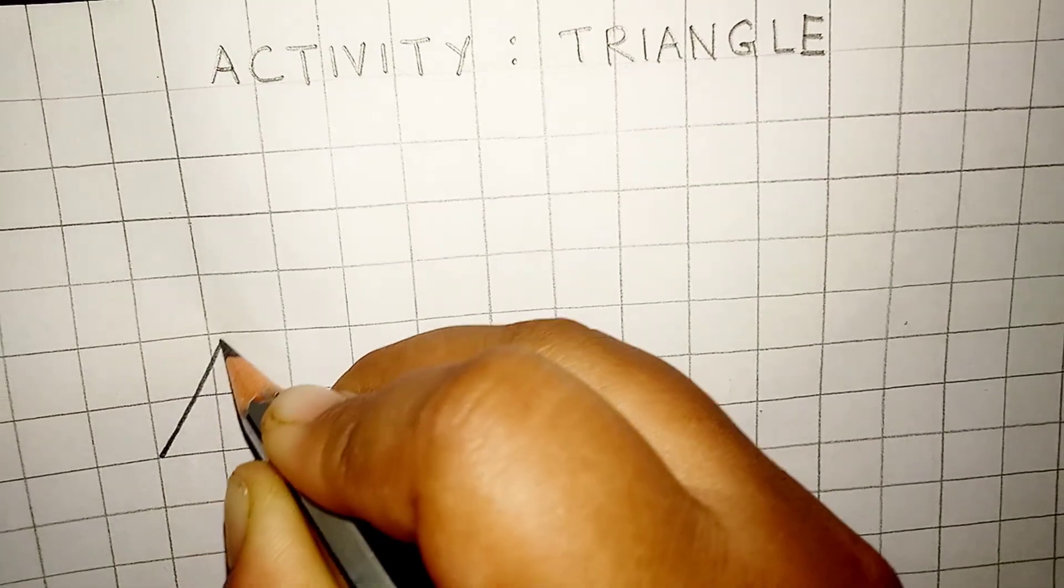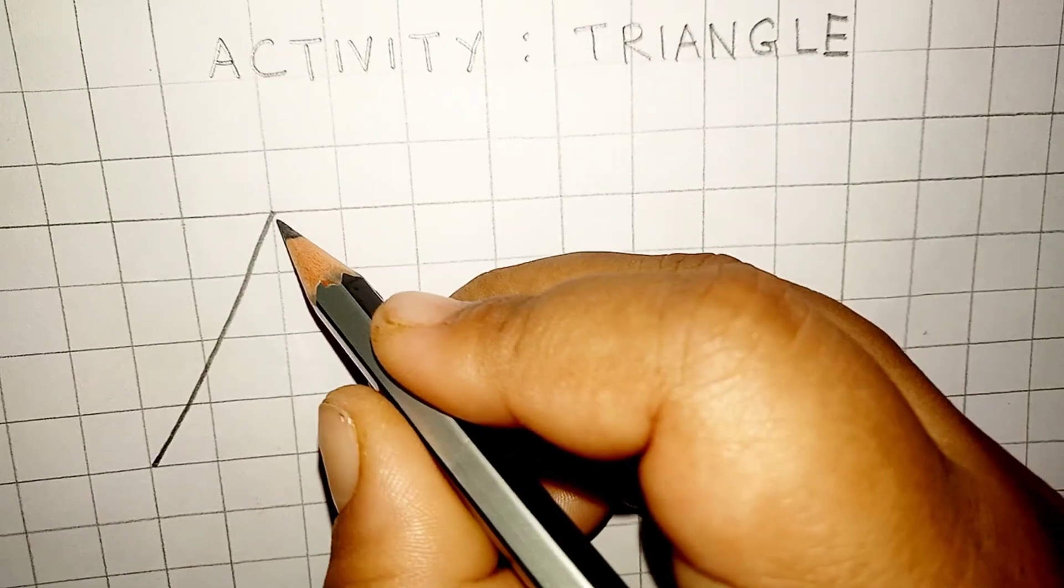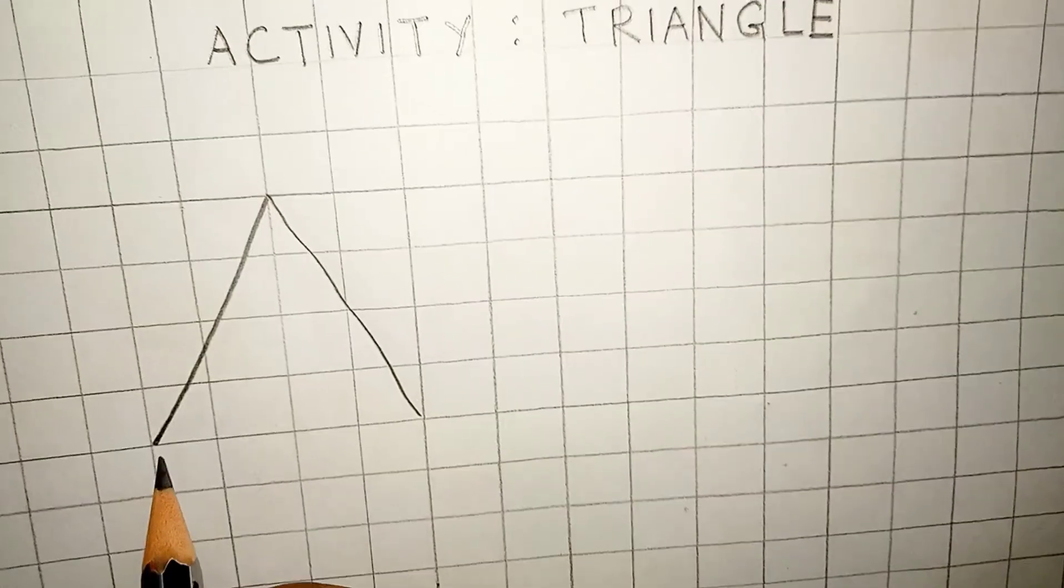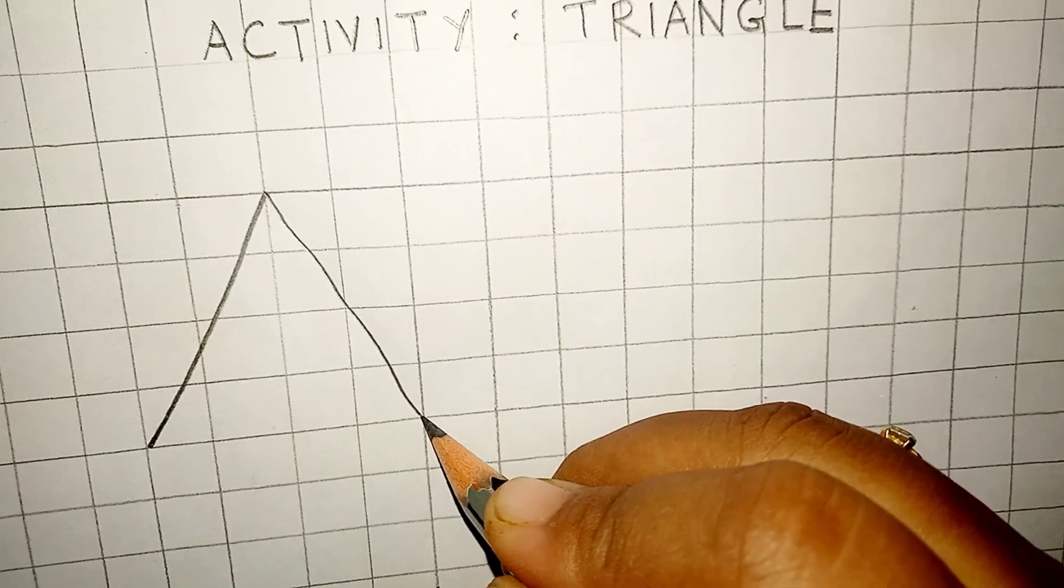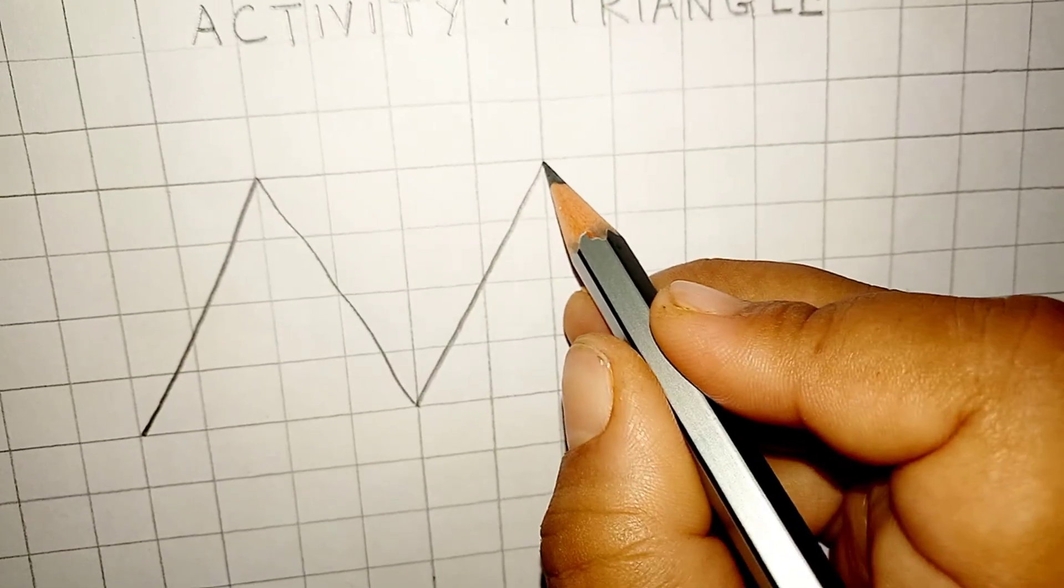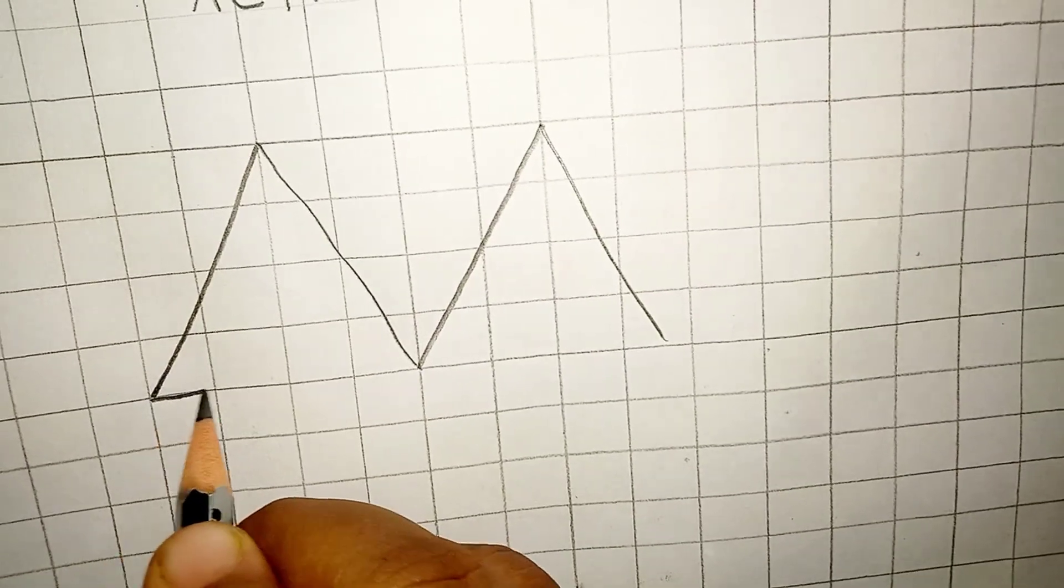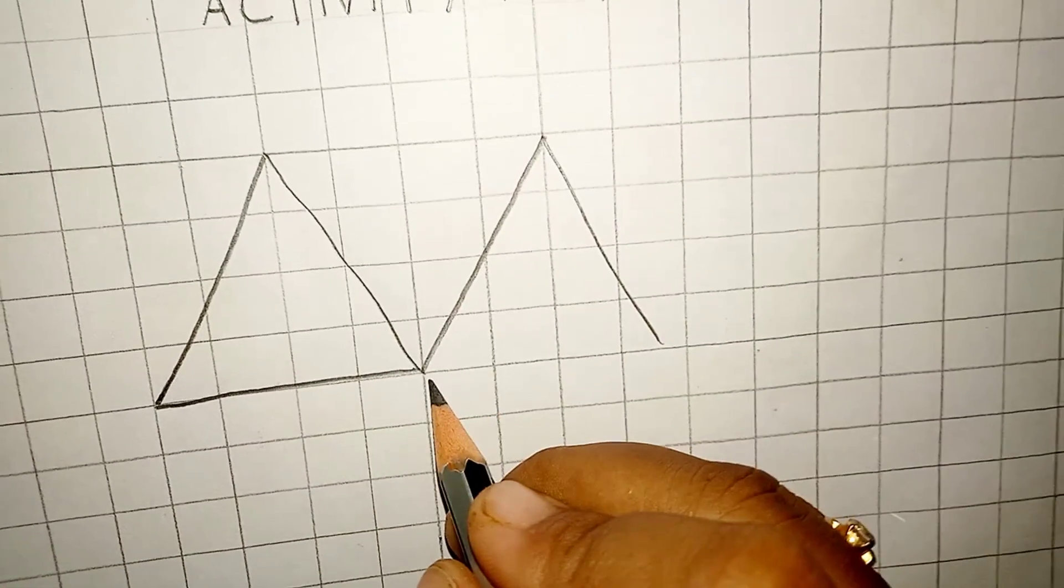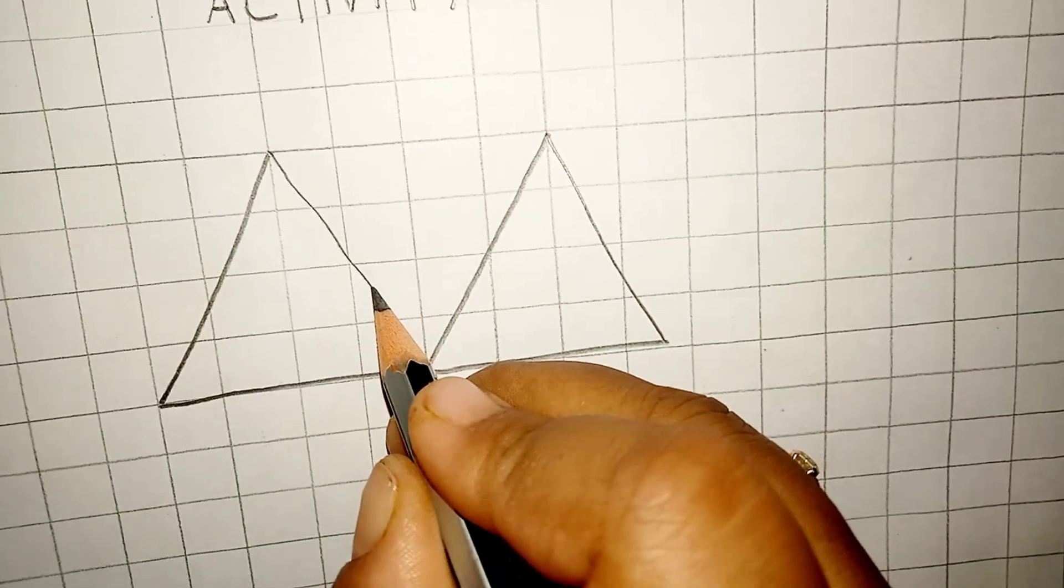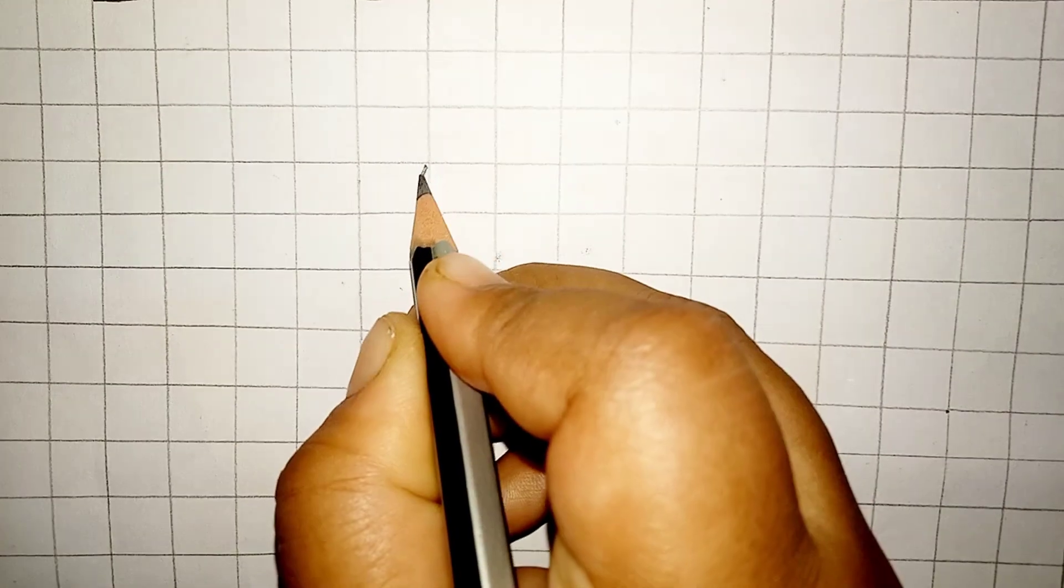So, first, we will draw like this. What is it? Let us give a sun. So, these are two hills.